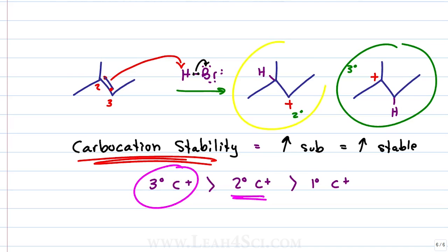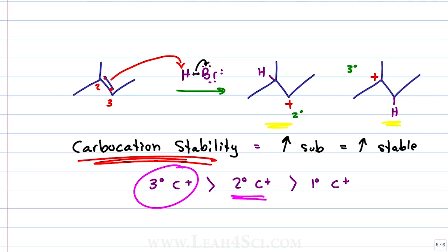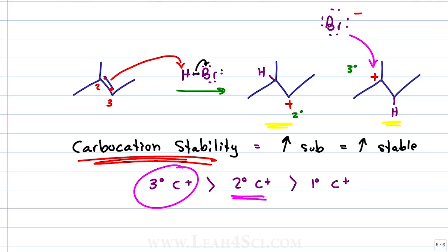If an intermediate has to form that is not stable, it's going to be very, very slow and may or may not form. So if we're looking at a reaction where both secondary and tertiary intermediates can form, the tertiary will form at such a faster rate that we'll end up with far more product from the tertiary intermediate. The nucleophile doesn't attack the more substituted carbon because it wants to — it's negative, it's looking for a positive charge, and wherever that positive charge happens to be, that's where it attacks.